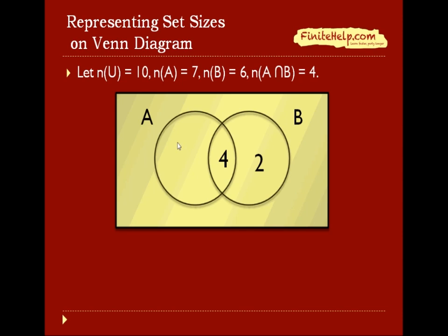In the same way, for the number of elements in A, it's 7. So this crescent-shaped region here on this side is going to be 3. And now, since we know that the universal set is 10, and here we have 9 in the middle, so that must mean that leaves 1 on the outside.